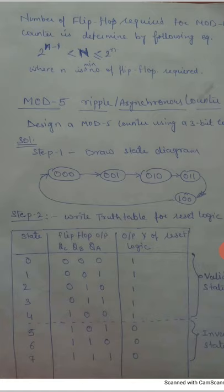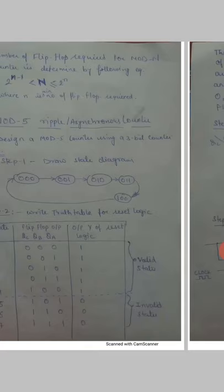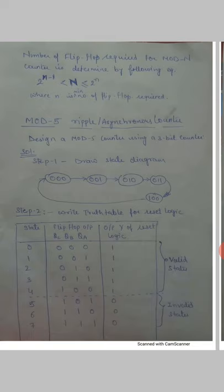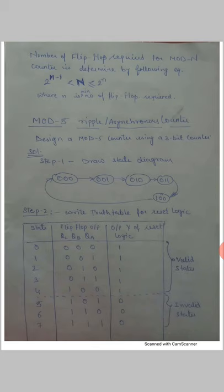For a mod-5 counter, we cannot use a 2-bit counter because a 2-bit counter can count a maximum of 4 states: 0, 1, 2, 3. So if we talk about a mod-5 counter, we need 5 states: 0, 1, 2, 3, 4. Therefore, we must use a 3-bit counter to design a mod-5 counter, as the total number of states for mod-5 is 5.